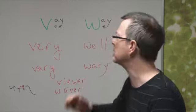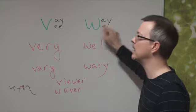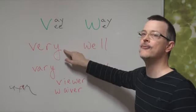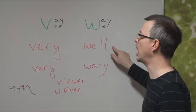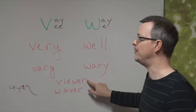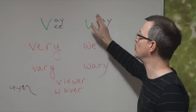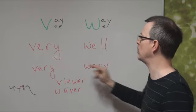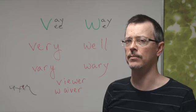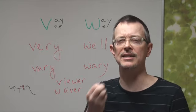So you've got to go slow. Go slow in the beginning. Let's say it together. Vay, way. Ve, we. Very, well. Very, wary. Viewer, waver. He is very wary around women. He is very wary around women. You need to practice. Practice, practice, practice.